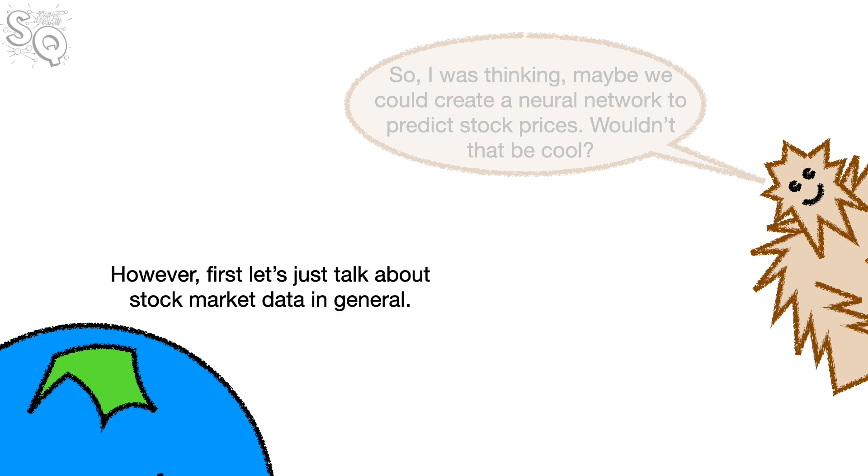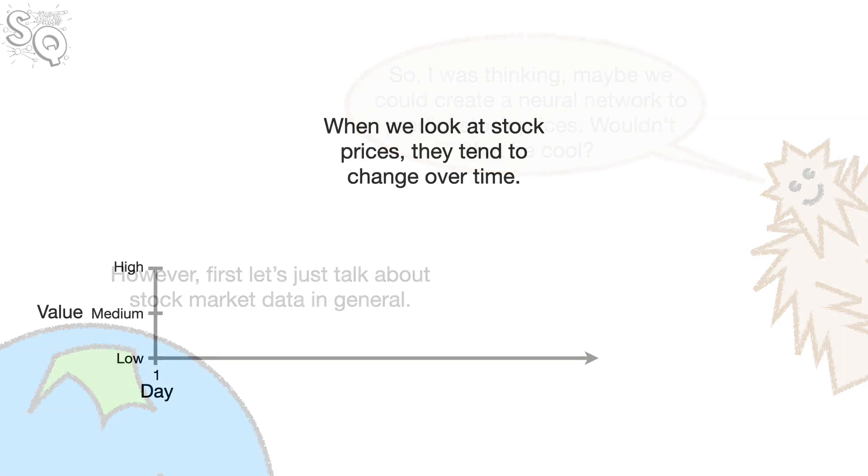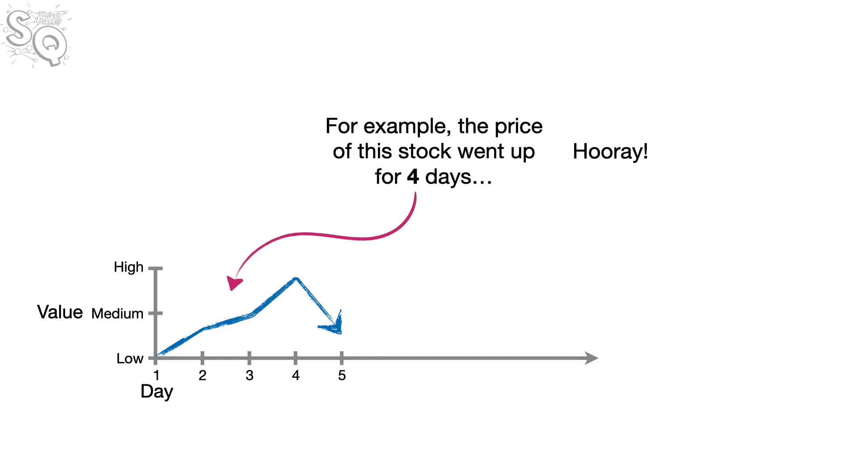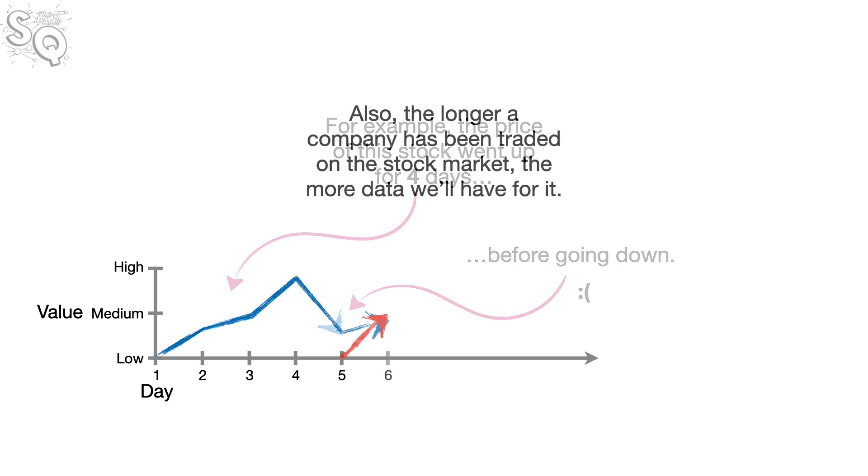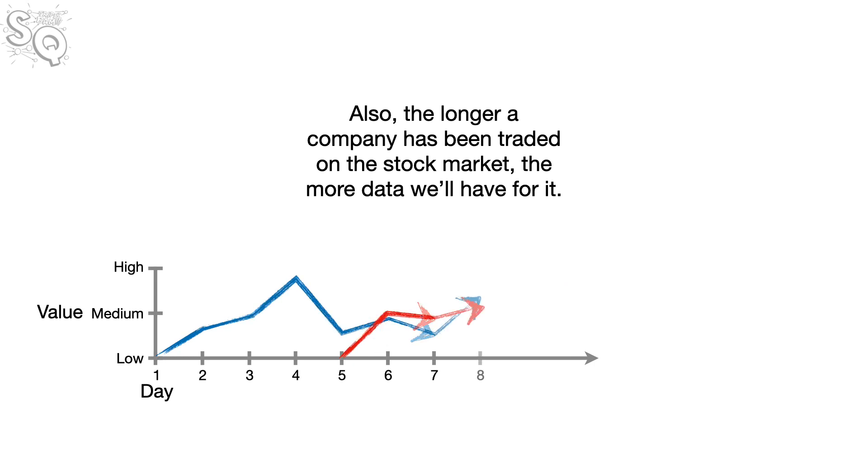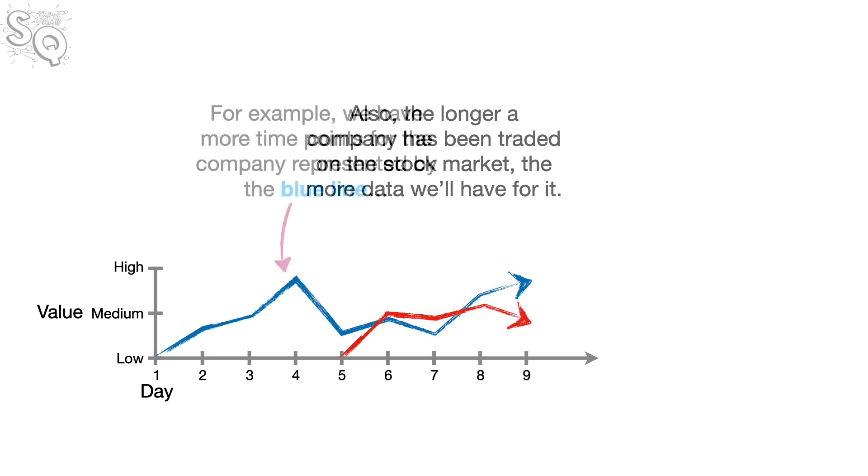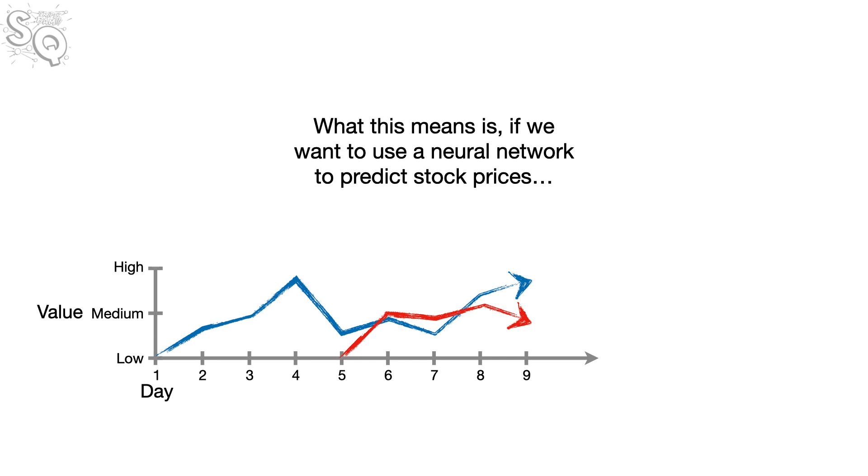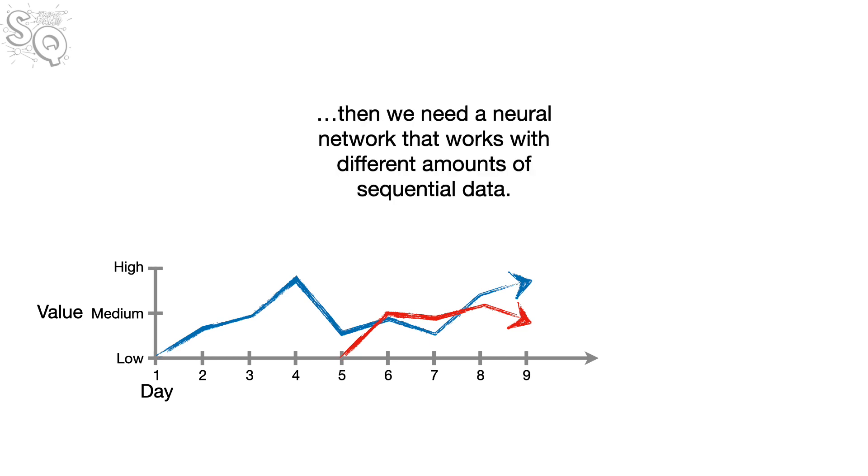However, first let's just talk about stock market data in general. When we look at stock prices, they tend to change over time. For example, the price of this stock went up for four days. Hooray! Before going down. Wah-wah. Also, the longer a company has been traded on the stock market, the more data we'll have for it. For example, we have more time points for the company represented by the blue line than we have for the company represented by the red line.